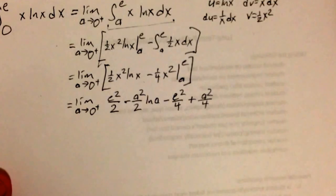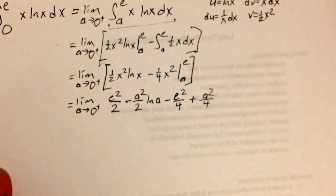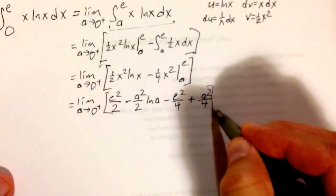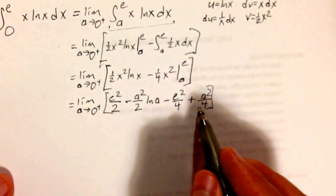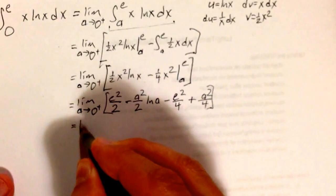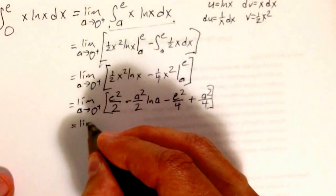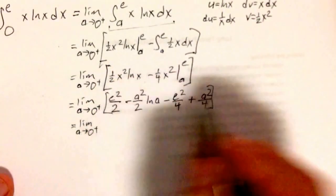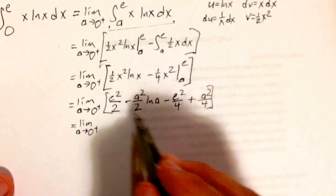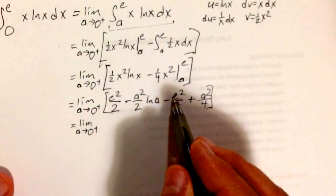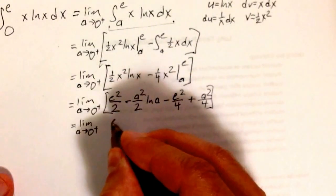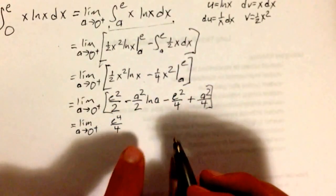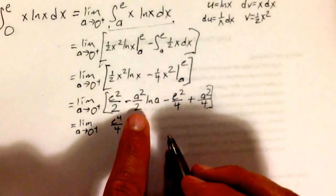So what happened there? I can combine these two things since I have so much in common, and this is a finite number as long as a is finite. It's perfectly fair to combine these. So a is a finite number before I've applied the limit. 1 half e minus 1 quarter e is e fourths, right? Then what do I have here? I have,